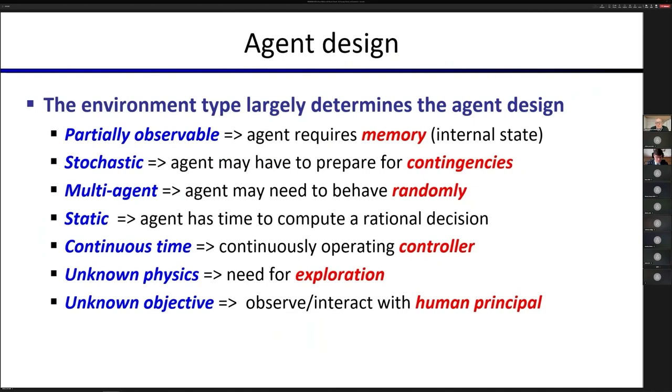So if the world is partially observable, then your intelligent agent is going to have to have some memory of what's happened in the past in order to make inferences about the parts of the world that it can't directly perceive. Multi-agent environments are ones where there are parts of the environment that act as agents, and so that leads you into game theory and the possibility of needing to behave randomly in that kind of environment.